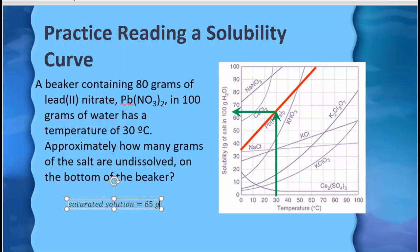But this problem tells me that there were 80 grams measured out and put in the beaker. So I had 80 grams total and 65 grams of it dissolves. So I should have 15 grams of lead nitrate sitting at the bottom of my beaker.